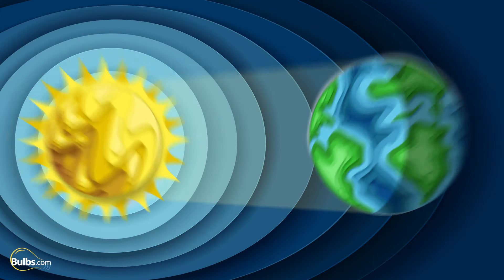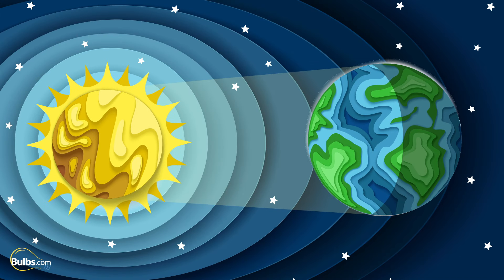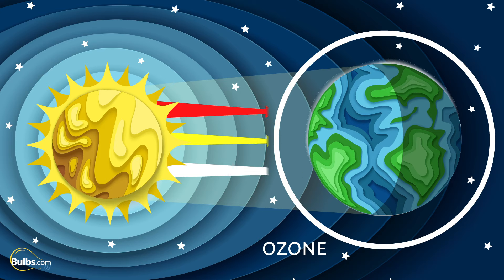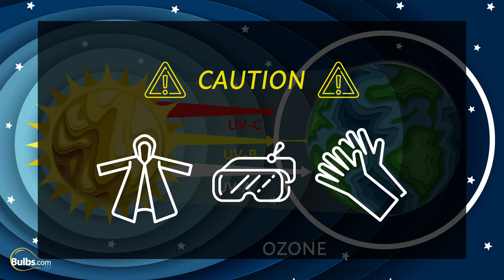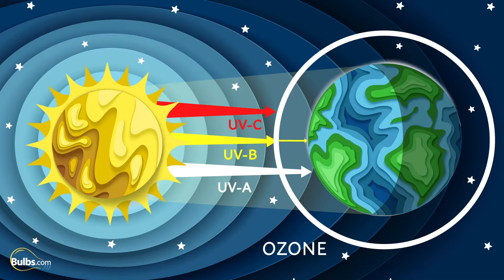UV light is the same as the rays that we get from the sun, and there are three types of ultraviolet light that reach the ozone layer around the Earth: UVA, UVB, and UVC. It's important to remember that without the ozone layer to protect us, artificial UV light can be harmful to living things and should be used in unoccupied spaces, or special protective gear should be worn to avoid the damaging effects to skin and eyes.